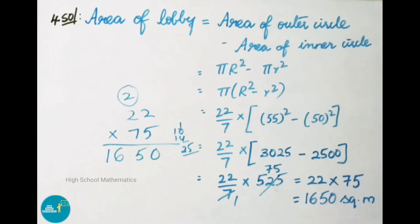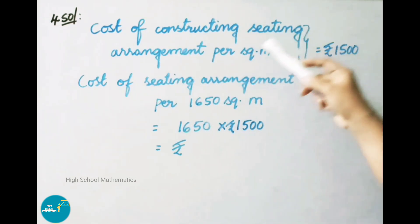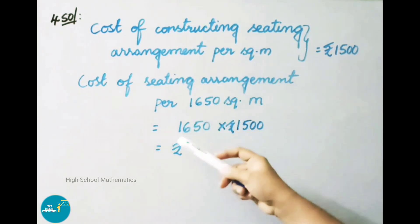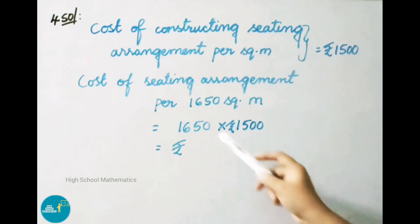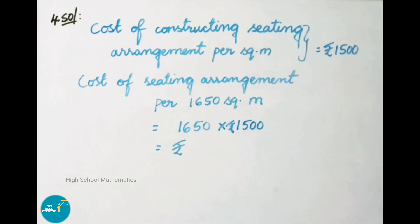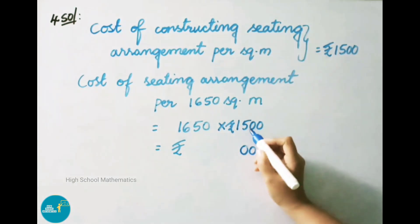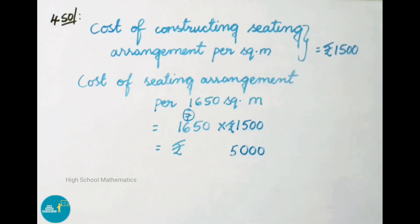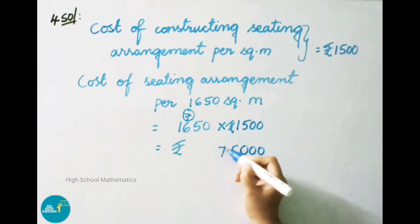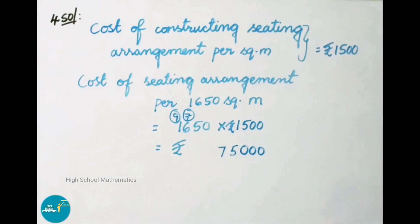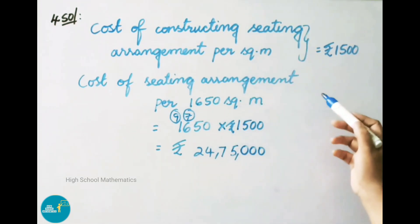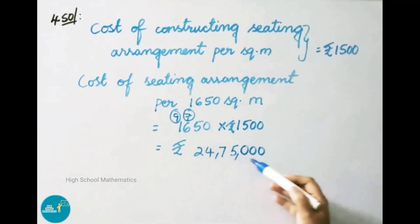Now find total cost of seating arrangement. Cost per square meter is 1500 rupees. Total cost = 1650 × 1500. There are 3 trailing zeros, so write 3 zeros and multiply 165 × 15: 15 × 5 = 75, write 5 carry 7; 15 × 6 = 90, plus 7 = 97, write 7 carry 9; 15 × 1 = 15, plus 9 = 24. Therefore, cost of seating arrangement for 1650 square meters is 24,75,000 rupees.